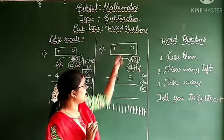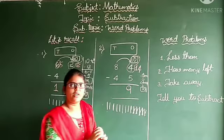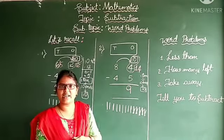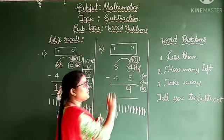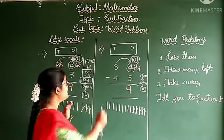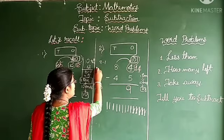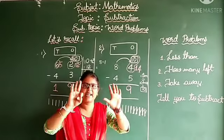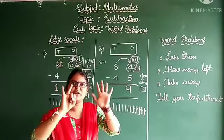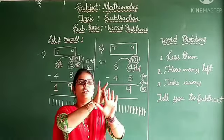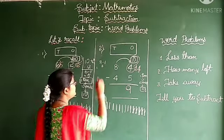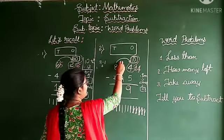Write that 9 under the 1s column. Now move on to the 10s part. You took 1 ten borrowed from the 10s place, so subtract 1 from 8. Keep 8 fingers, subtract 1 — 1, 2, 3, 4, 5, 6, 7 fingers are left. Write down 7 here instead of 8.